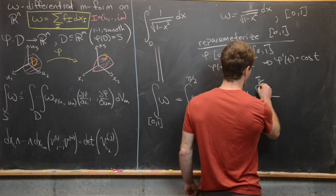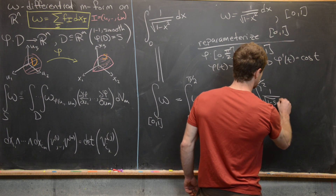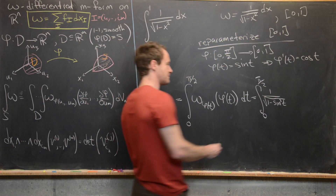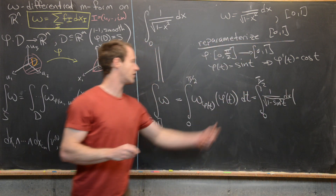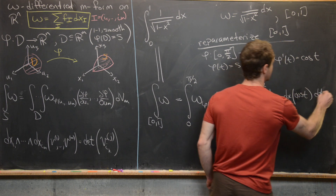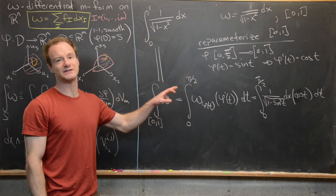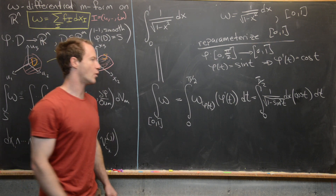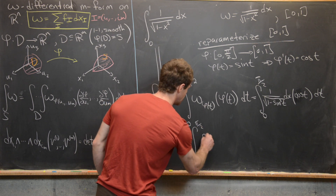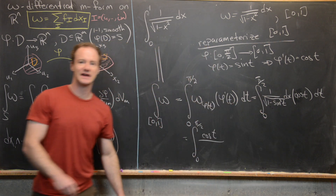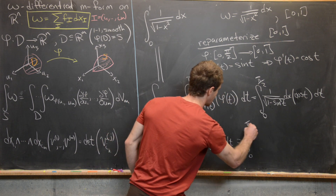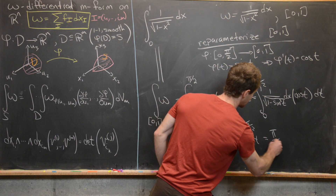So we get the integral from 0 to π/2 of 1/√(1 − sin²t), and then dx evaluated at cos(t) — which is just cos(t) by the 1×1 determinant rule — times dt. By trig identities, √(1 − sin²t) = cos(t), so the integrand simplifies to cos(t)/cos(t) = 1. We have the integral from 0 to π/2 of dt, which equals π/2.